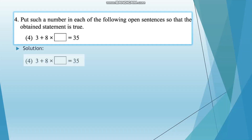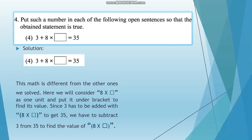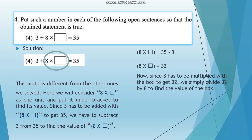The next question: 3 plus 8 multiplied by a blank box is equal to 35. This math is a little different from the others. We consider 8 times the blank box as one unit under a bracket. Since 3 has to be added with 8 times the blank box to get 35, we subtract 3 from 35 to find the value of 8 times the blank box: 8 times blank box equals 35 minus 3, which gives 32. We then divide 32 by 8, giving blank box equals 4.